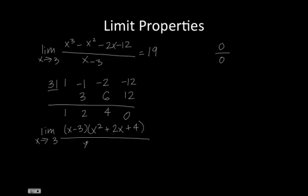Divided by x minus 3. And since the definition of a limit has this phrase but not equal to 3, we can cancel or divide out the x minus 3. So now we're left with the limit as x approaches 3 of the function x squared plus 2x plus 4 where x does not equal 3.